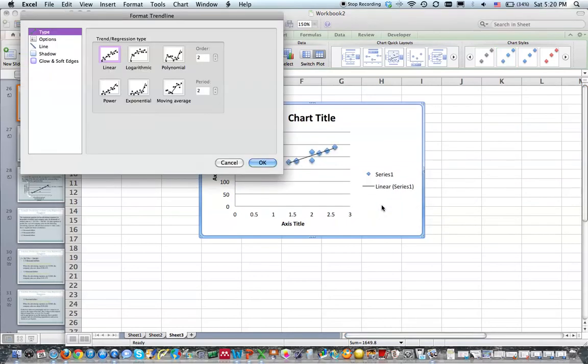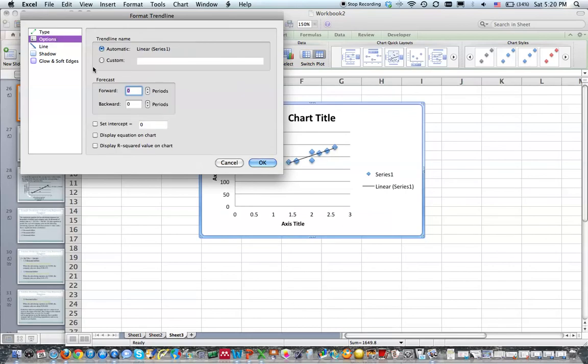Add trend line. When we add trend line, I want a linear trend line because this is a linear regression. And for my options, I want to display the equation on the chart and display r squared value on the chart. Now, mine's a little bit different because it's a Mac, but on PCs, all of these options will actually pop up on the first page, so it's a little bit easier.